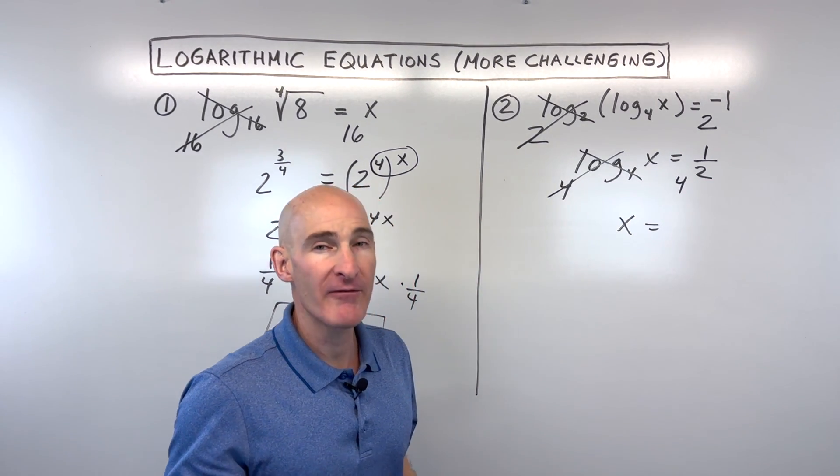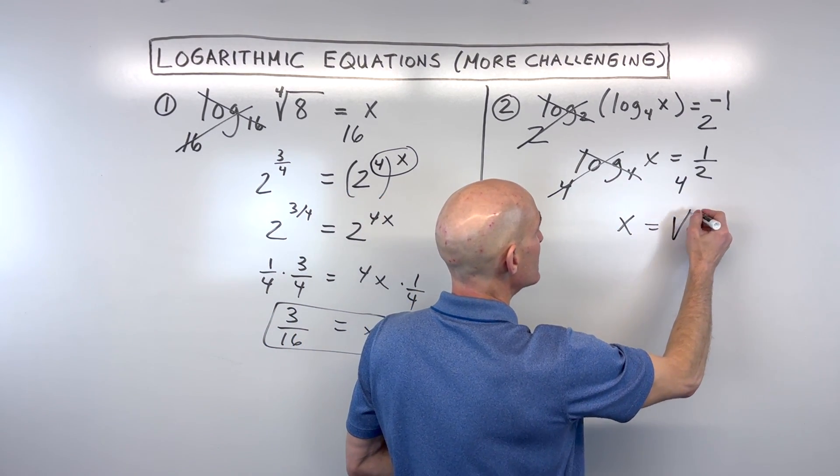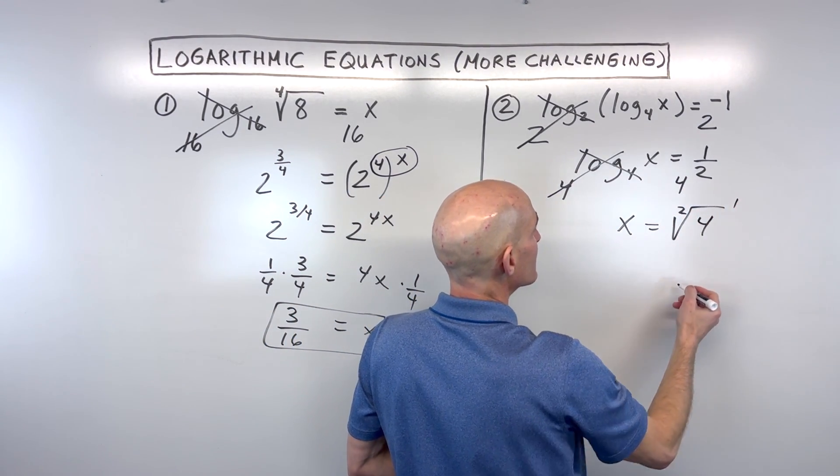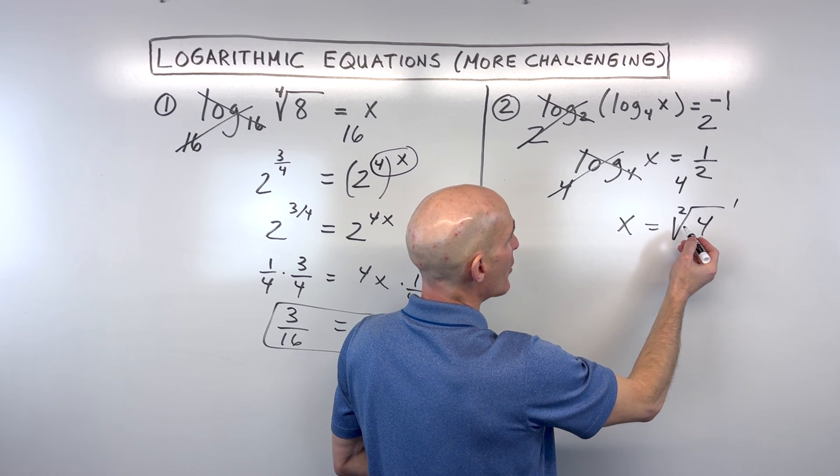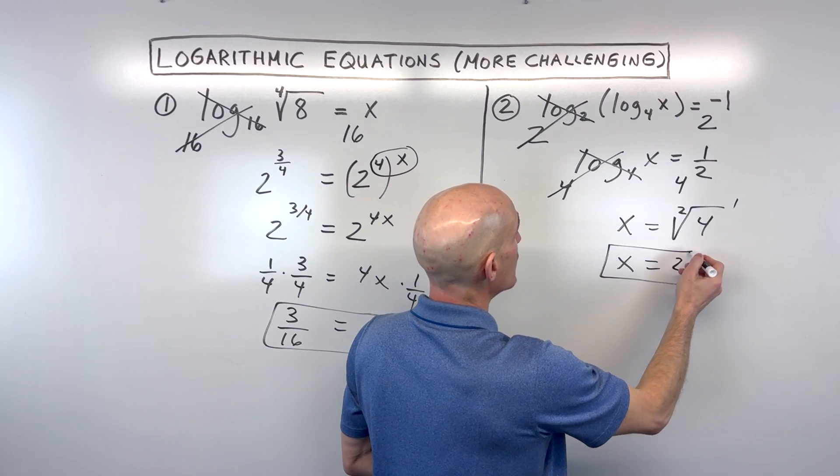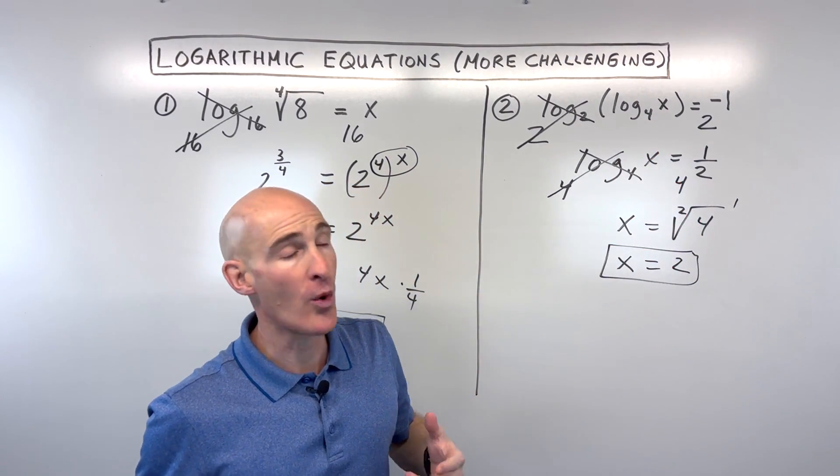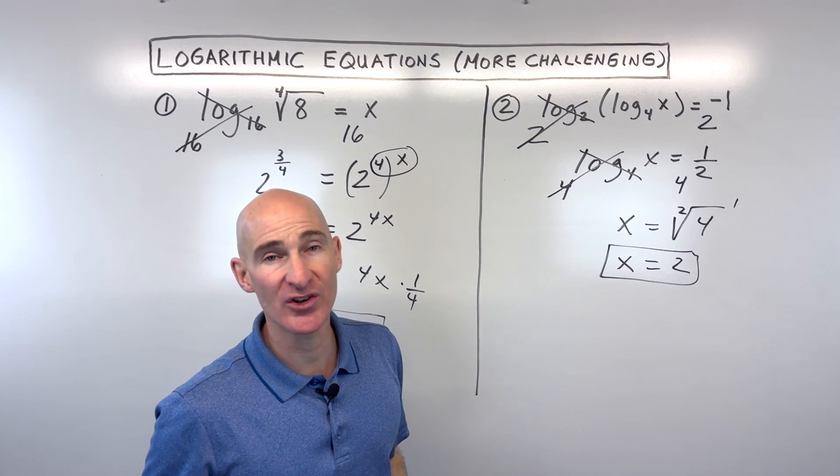But remember, the 1 half power is the same as the square root, because this denominator, that's our index. So this is like the square root of 4 to the first power. The square root of 4 is 2, and that's our final result. Again, you want to check to make sure you're not taking the log of 0 or a negative quantity. And in this case, we're not, so this is a good answer.